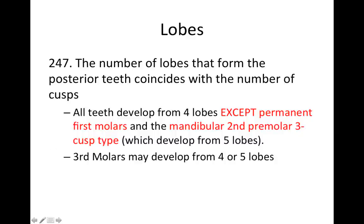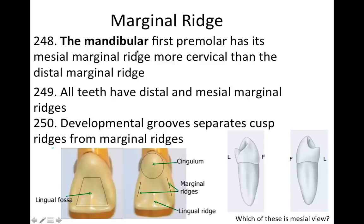Third molars kind of vary — they may develop from four or five lobes. Regarding the marginal ridge, the mandibular first premolar has its mesial marginal ridge more cervical than the distal marginal ridge. Here's a picture of the premolar, and you'd be able to tell by looking at the tooth and seeing that the mesial marginal ridge is more cervical. When you look from the mesial, you should be able to see a lot more of the distal marginal ridge, whereas looking from the distal, you don't really see much of the mesial marginal ridge.